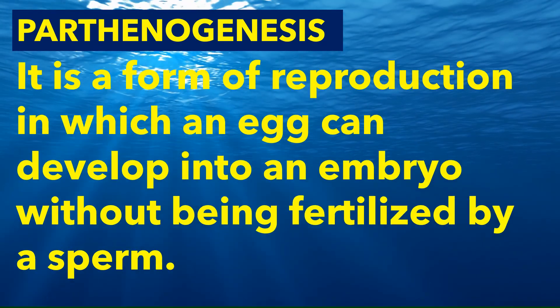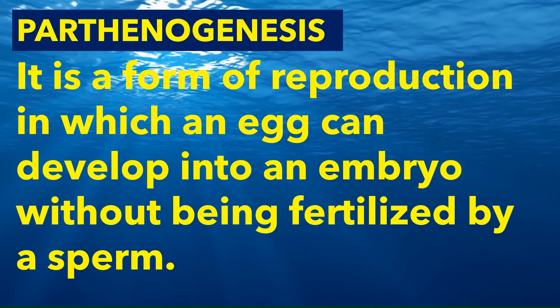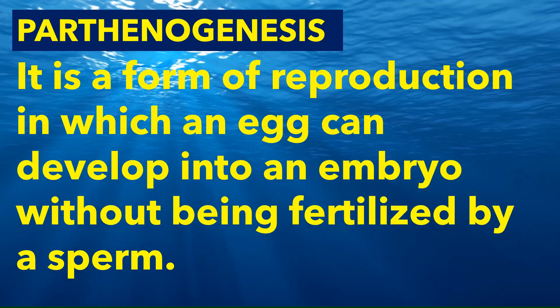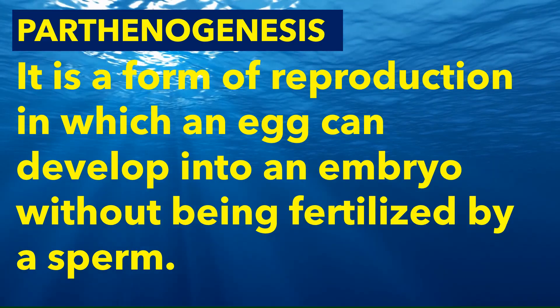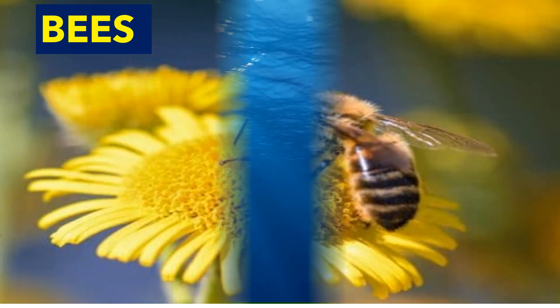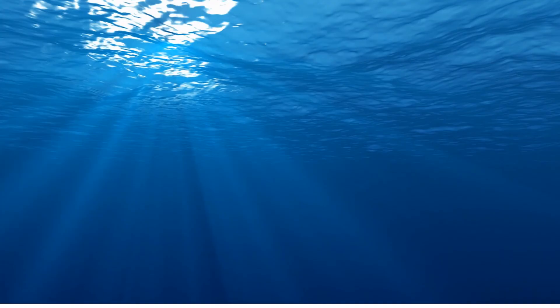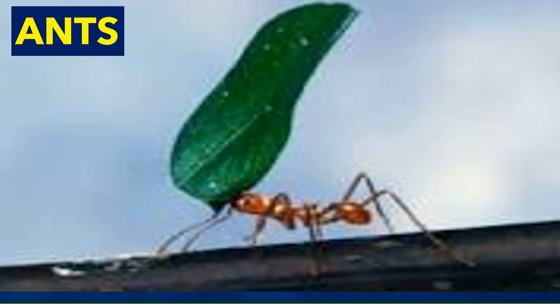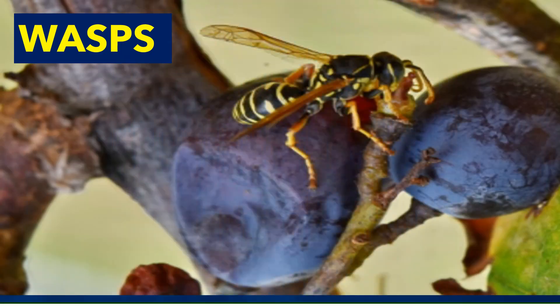The last method of asexual reproduction is parthenogenesis. It is a form of reproduction in which an egg can develop into an embryo without being fertilized by a sperm. Examples of animals which reproduce by parthenogenesis are bees, wasps, and ants.